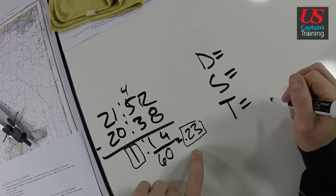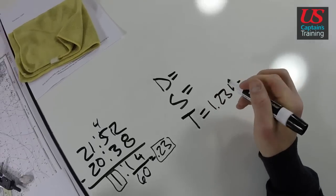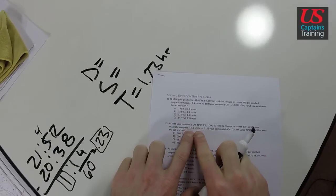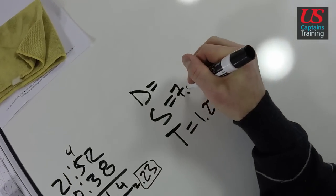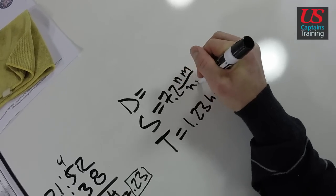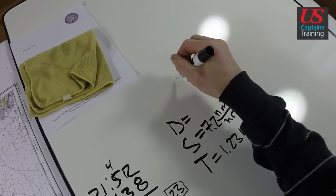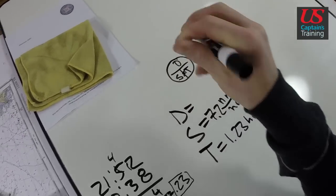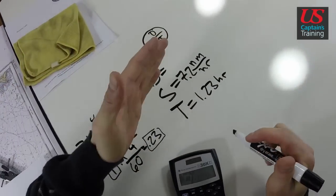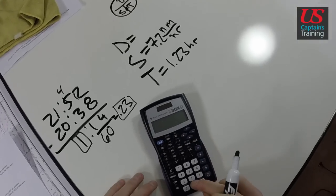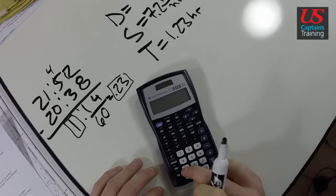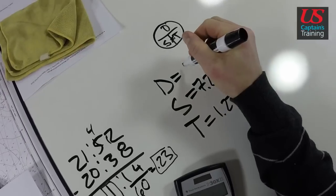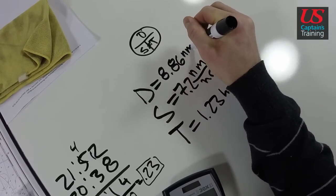Now we have our time, 1.23, 1.23 hours. And a speed was given in the problem. Speed in the problem, 7.2 knots. So 7.2 nautical miles per hour. Distance is equal to, if we look at our D street memory aid, speed times time is equal to distance. So now we can get a distance down the course that we intended to travel. 7.2 times 1.23 equals 8.856. So 8.86, 8.86 nautical miles.